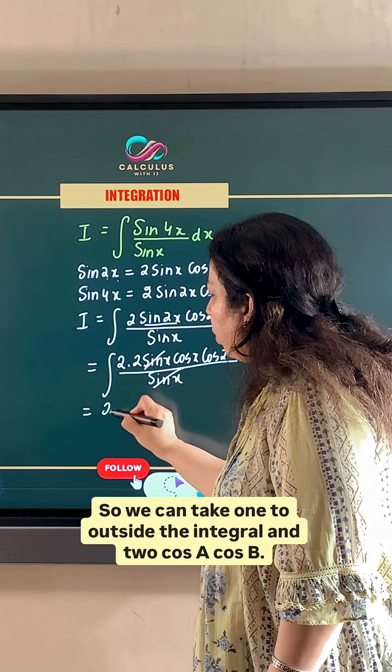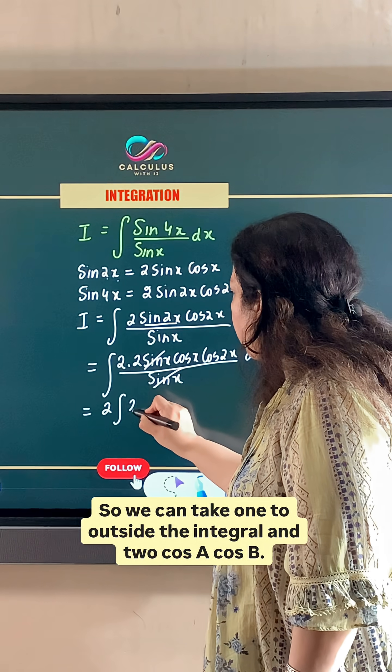So we can take 1, 2 outside the integral. And 2 cos a cos b. 2 cos x cos 2x dx.